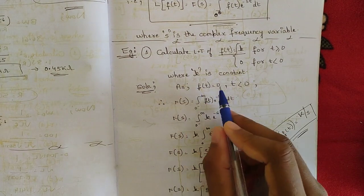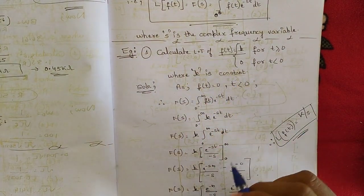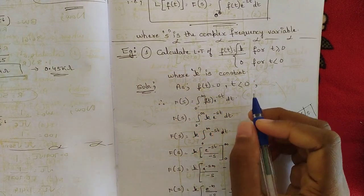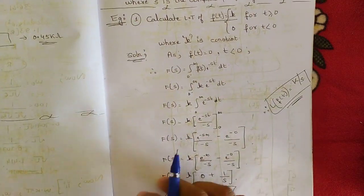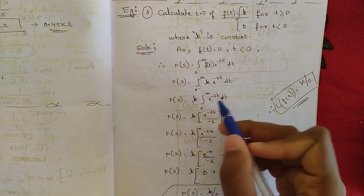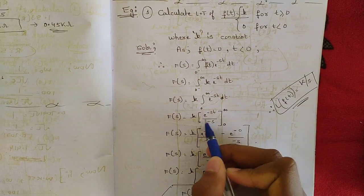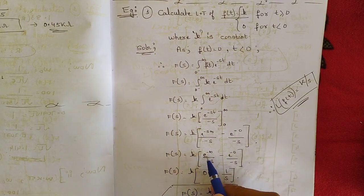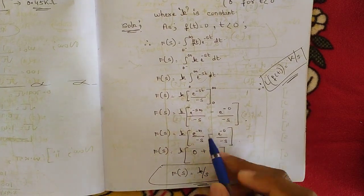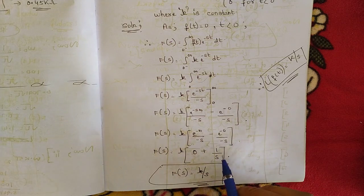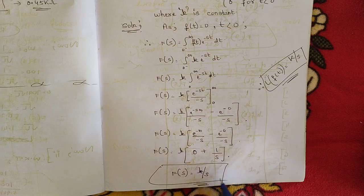Since f(t) = 0 for t < 0, we write the general definition: F(s) = integral from 0 to infinity of f(t) e^(−st) dt. Substituting f(t) = k: F(s) = k times the integral of e^(−st) dt. We know the integral of e^(−st) is e^(−st) divided by (−s), with limits from 0 to infinity. Substituting limits: e^(−∞) = 0, and e^0 = 1, so we get k times (0 + 1/s). Therefore F(s) = k/s.